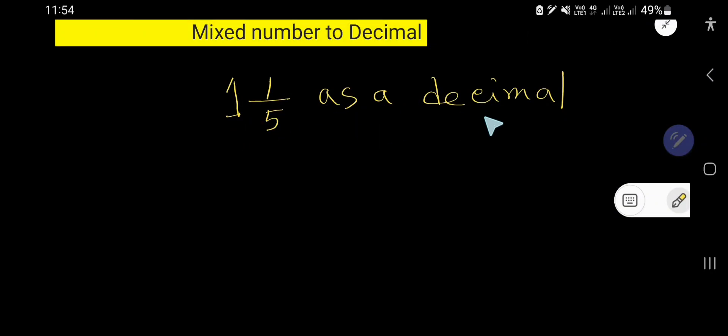One and one fifth as a decimal. To convert this mixed number to decimal, you can rewrite this mixed number as one plus one over five. This is the whole number part and this is the fractional part.